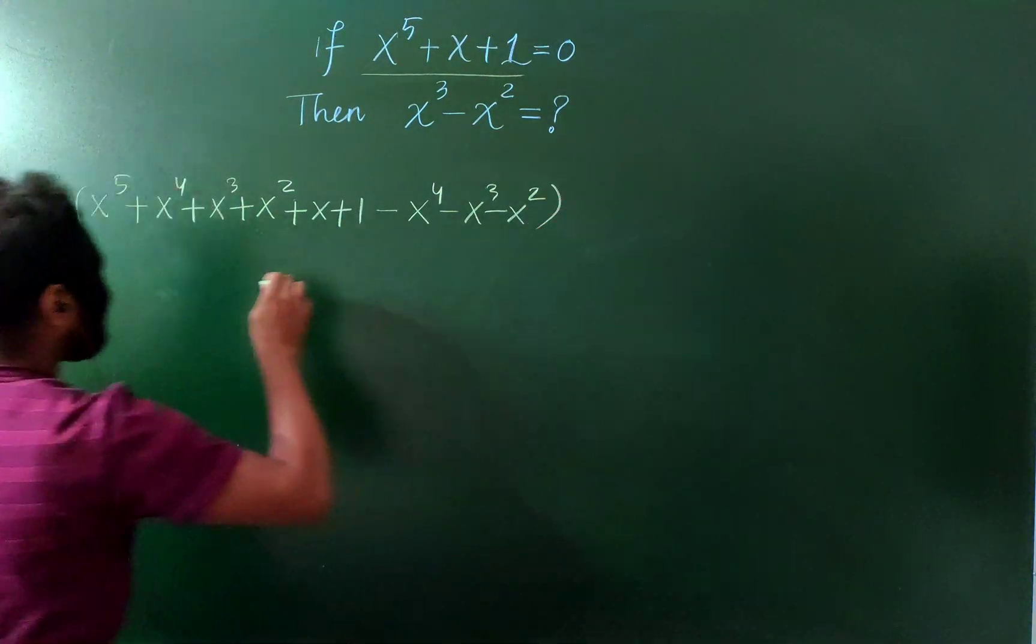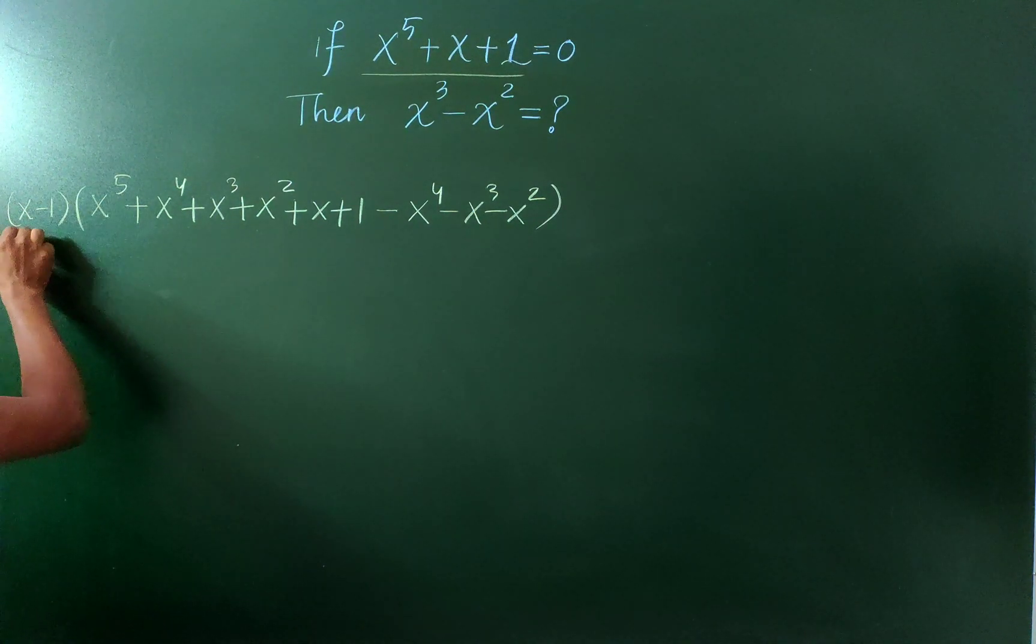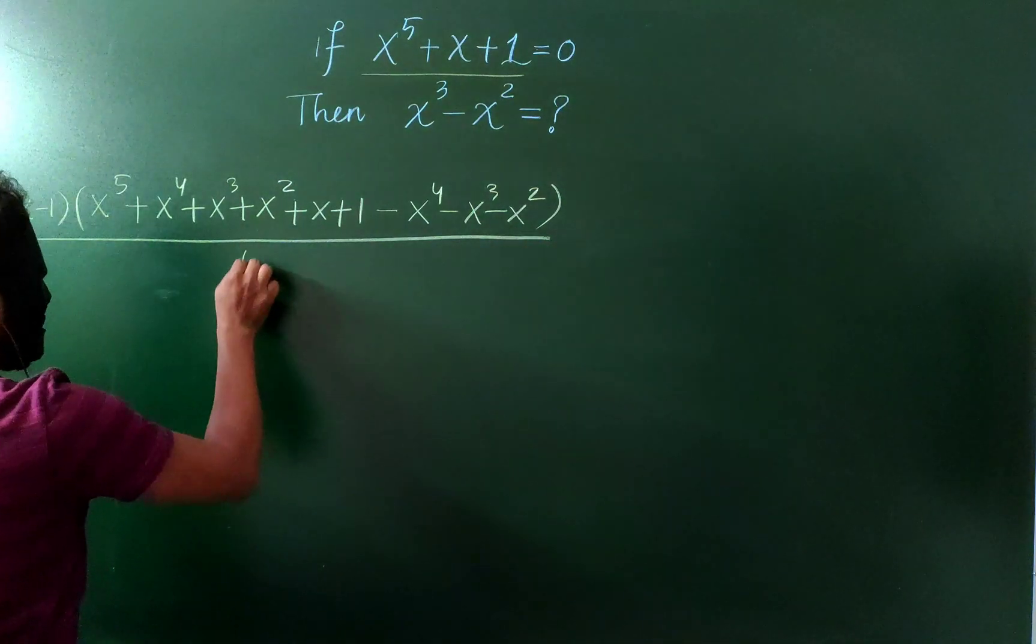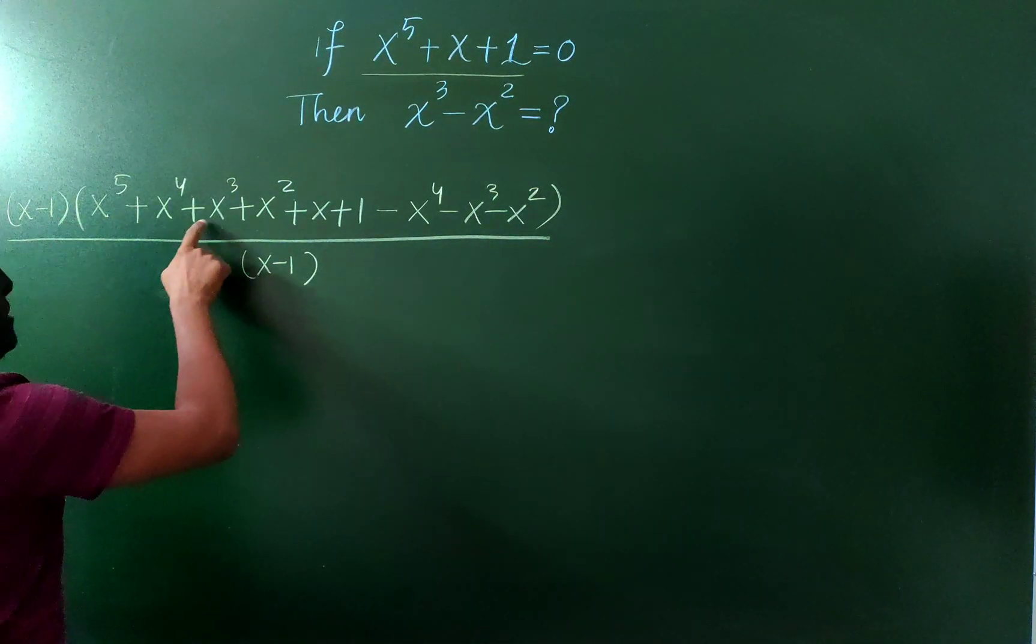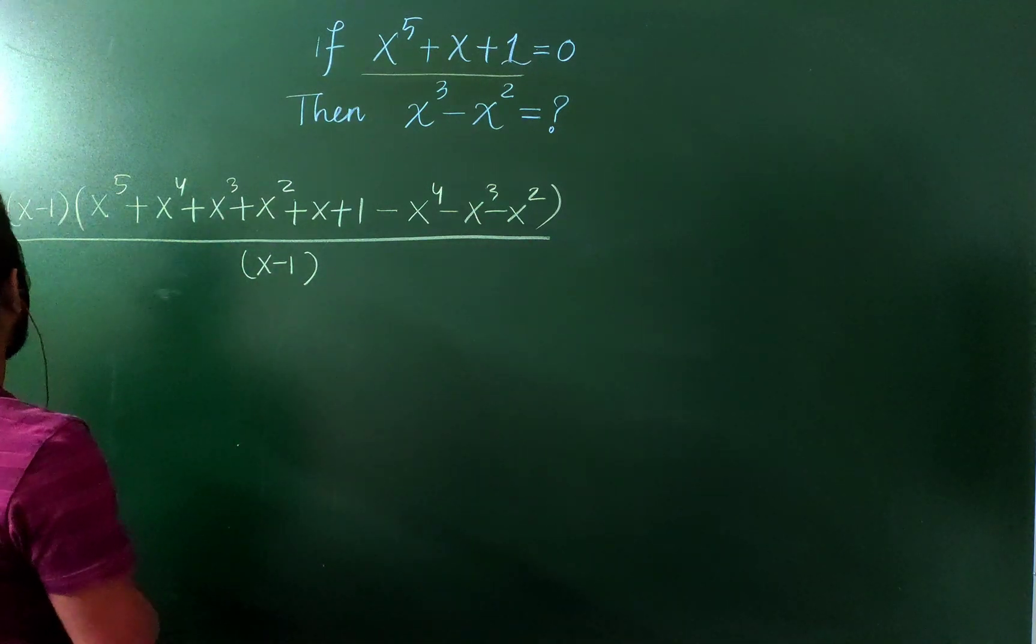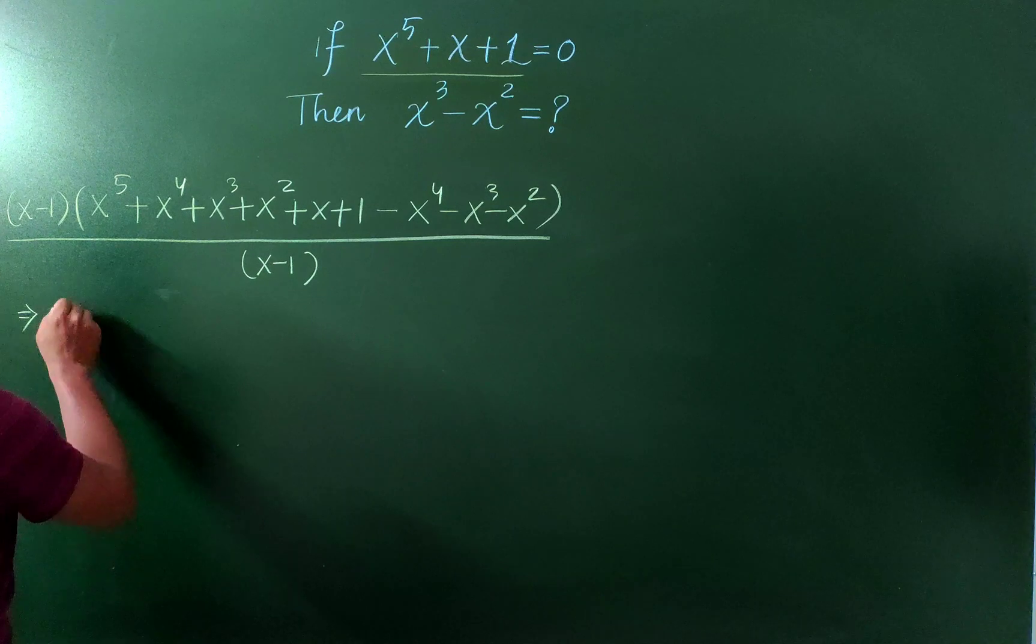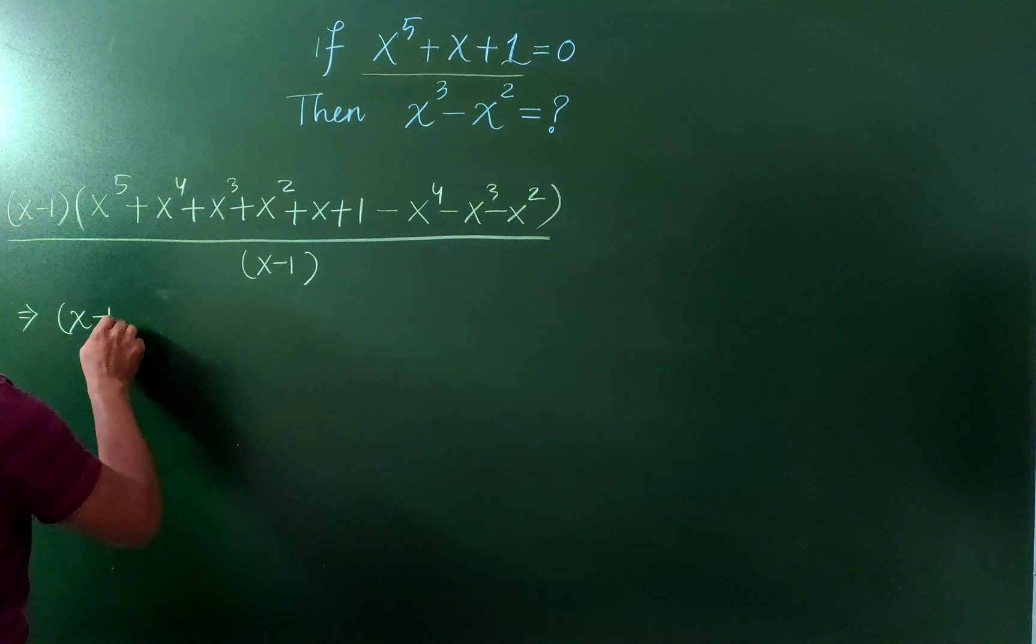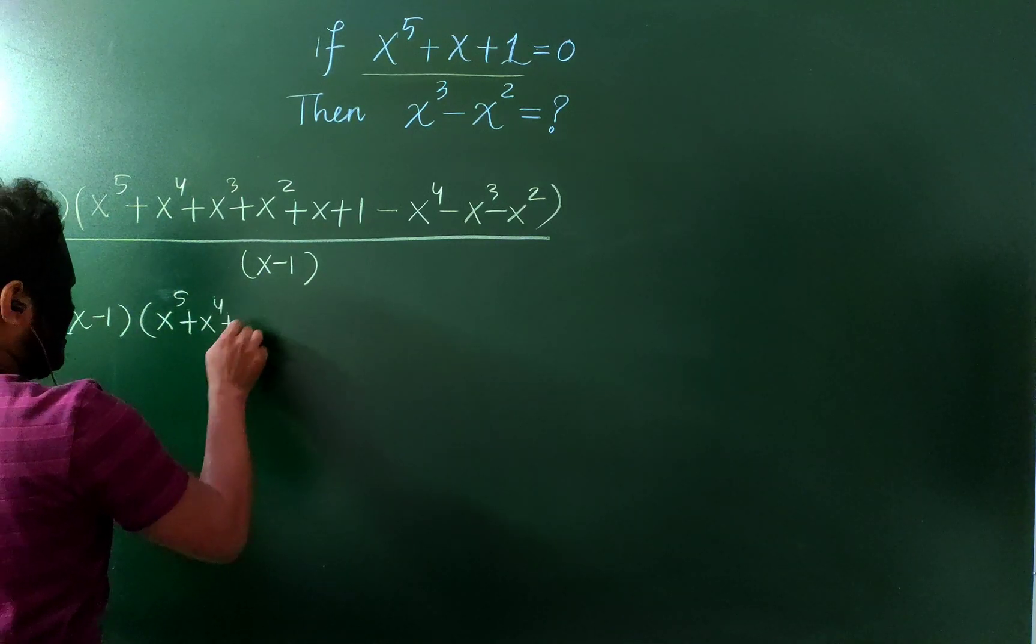And let's multiply everything with x minus 1 and divide by x minus 1. Why? So that I can couple with this one and let's divide it. So I can do x minus 1, x^5, x^4.